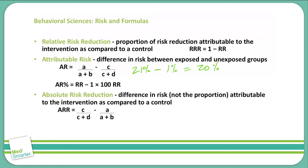Let's take an example. 8% of the people who receive a placebo vaccine will develop the flu, compared to 2% of the people who receive the flu vaccine. For our absolute risk reduction, we take that 8% and subtract the 2% that developed the flu. That gives us 6%, or 0.06, as our absolute risk reduction of the flu shot to developing the flu.